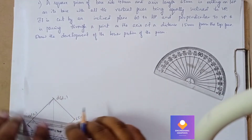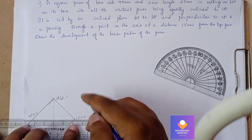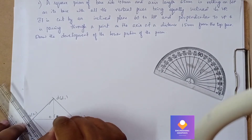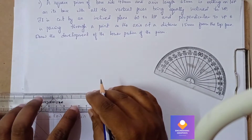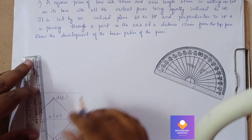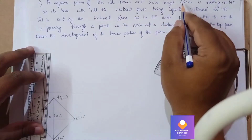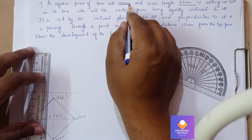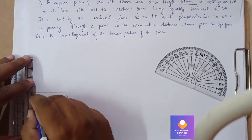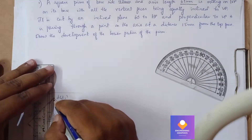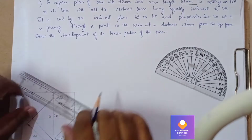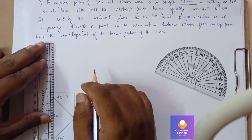We can draw thin lines to find the center of the axis — it is O and O1. Draw one small XY line. Now project it upward to complete the front view. The axis length is 65mm, so we will project upward from the axis point and draw the axis of dimension 65mm here.